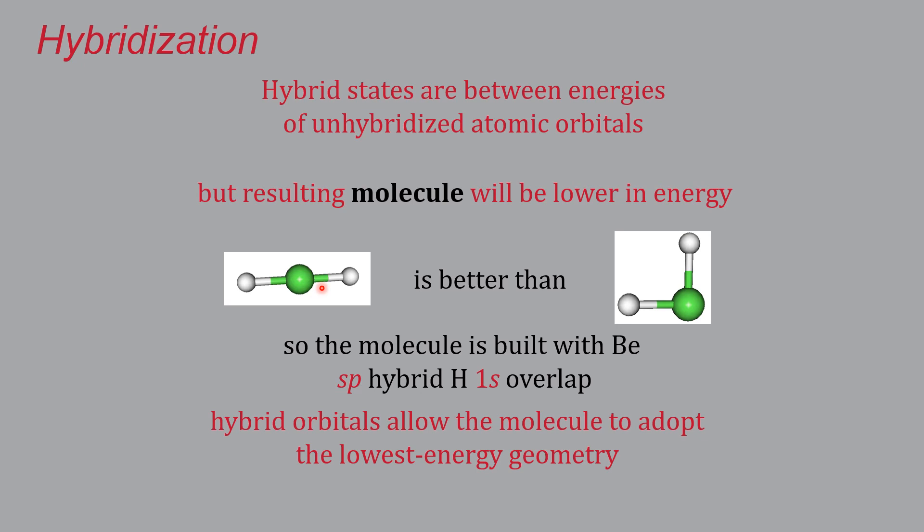So even though those electron states are a little higher in energy, it allows the molecule to adopt a lower energy geometry, and it's better overall. So hybrids allow the molecules to adopt their lowest energy geometry, which is defined as the one that keeps these electron domains as far away from each other as possible. When there aren't bonds this isn't a problem, but when there are bonds, these hybrid states are the way to go.